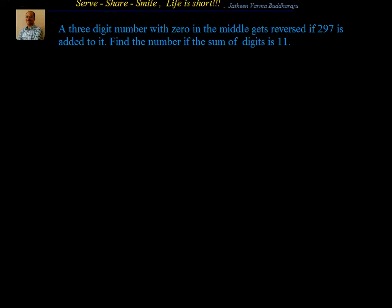A three-digit number with zero in the middle gets reversed if 297 is added to it. Find the number if the sum of digits is 11.